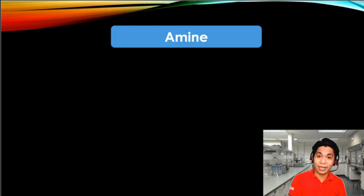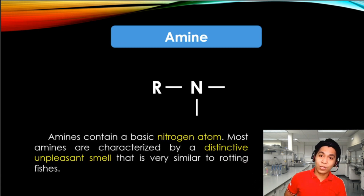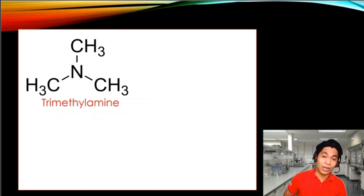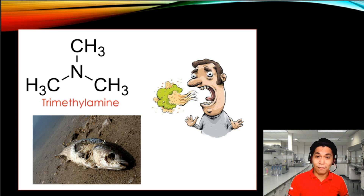The last functional group in our list is the amine. Amines have this chemical structure: it is a carbon directly attached to a nitrogen. Molecules with amine in them produce pungent odors, just like the molecule known as trimethylamine. Molecules with trimethylamine can be found from decaying animals and bad breath. The amine is located here.